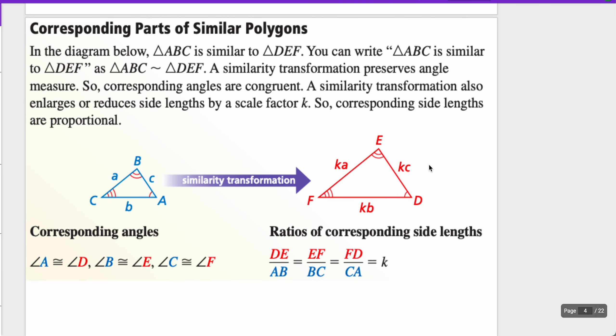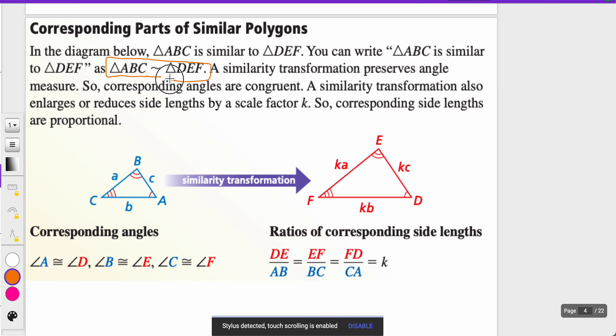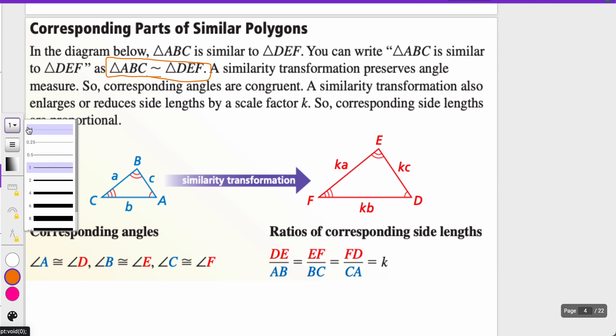First thing we want to know are what are all those corresponding parts. In the diagram below, triangle ABC is similar to DEF, written with a squiggly symbol. A similarity transformation preserves angle measurements, so angles will be congruent. It also enlarges or reduces side lengths by a scale factor k, so corresponding side lengths are proportional, which is why we can focus on writing proportions.